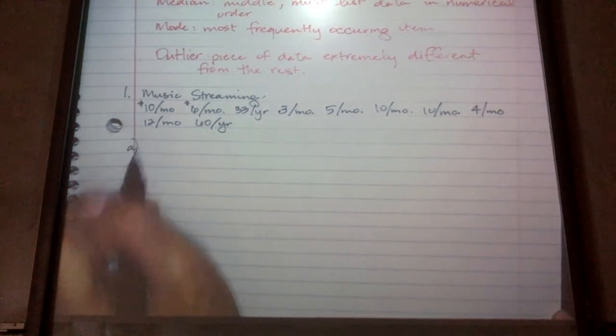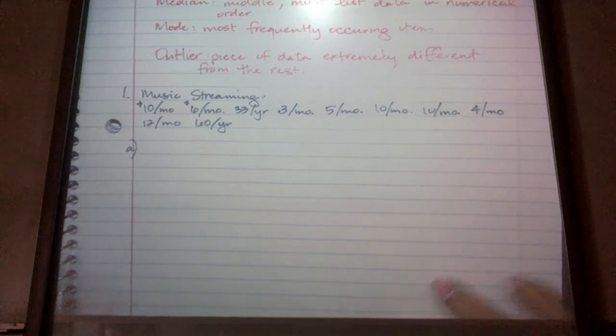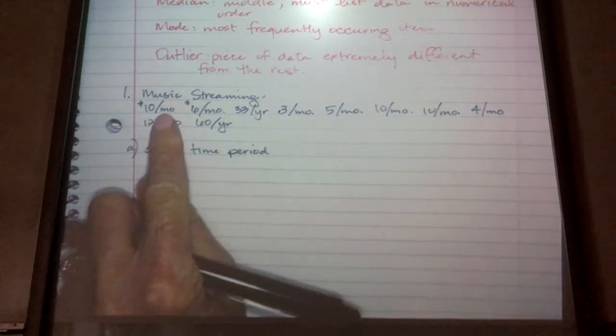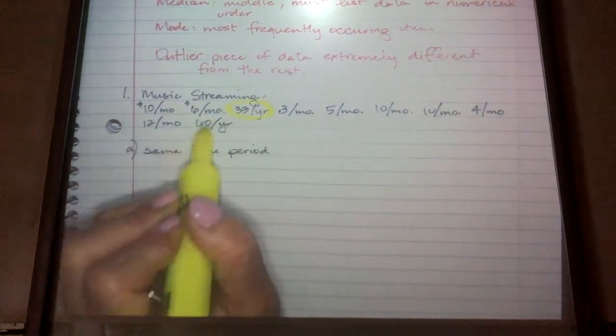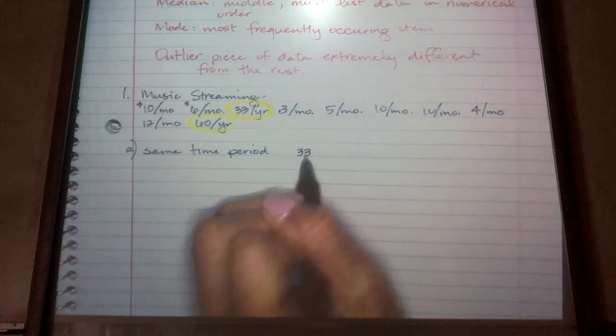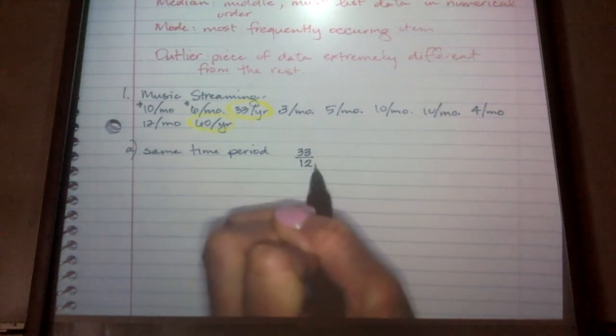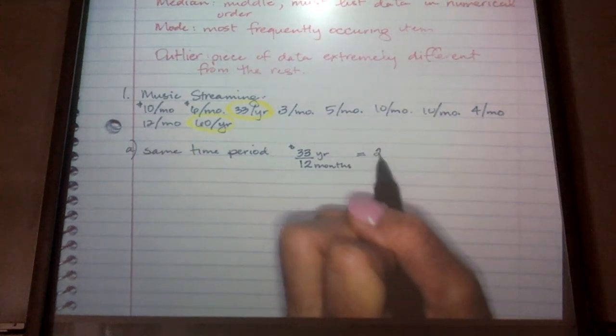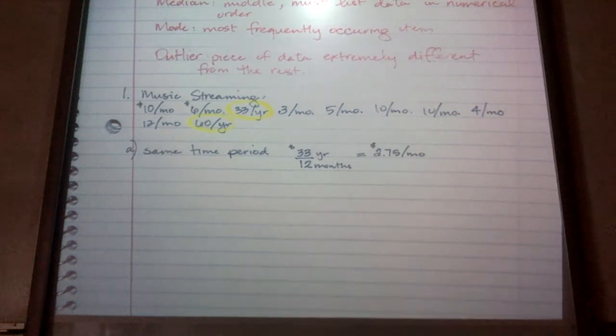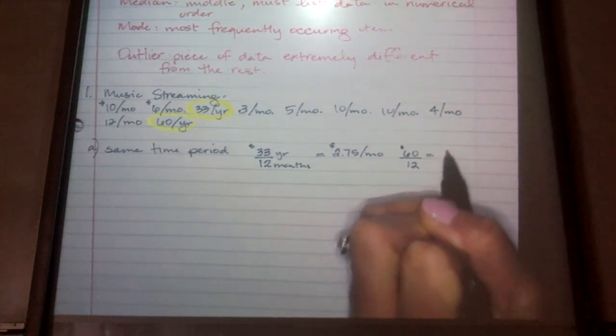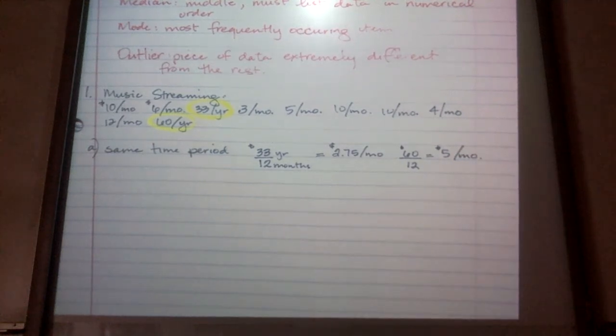So let's first start with, they have to all have the exact same time period. So I have all a bunch in a month, but I have two that are per year. So if you run into this in your homework or you have different time periods, you have to convert those to be the same time period. So $33 per year, I'm going to divide that by how many months there are. There are 12 months. So that would equal, if I divide 33 by 12, I ended up with $2.75 per month. And then I'm going to do the same thing for the other one that was $60 per year. So $60 divided by 12 gives me $5 per month. So I'm going to use these in place of these two for the rest of our data.